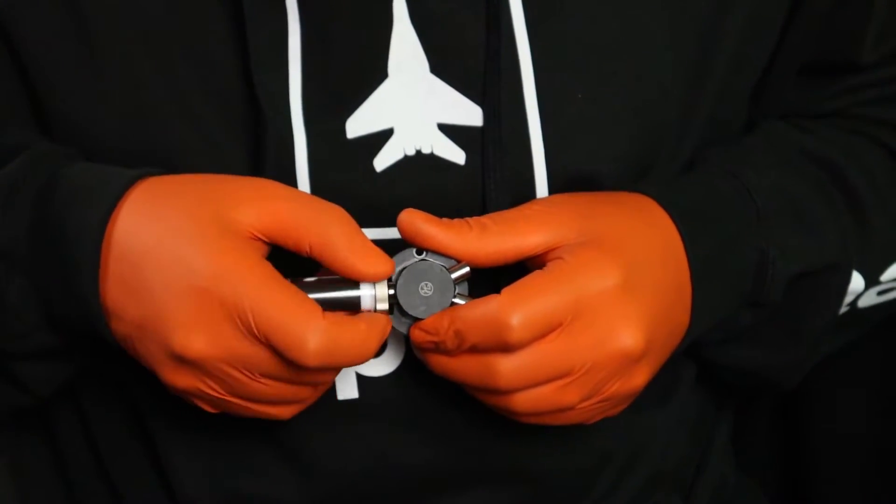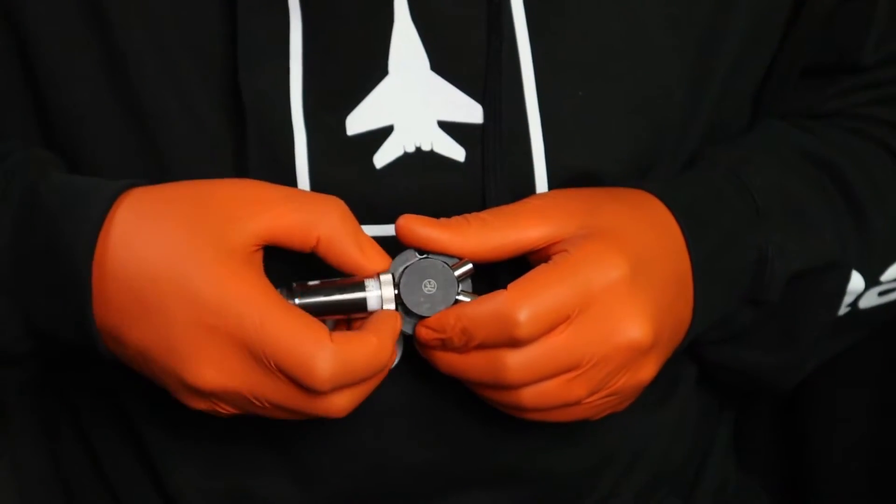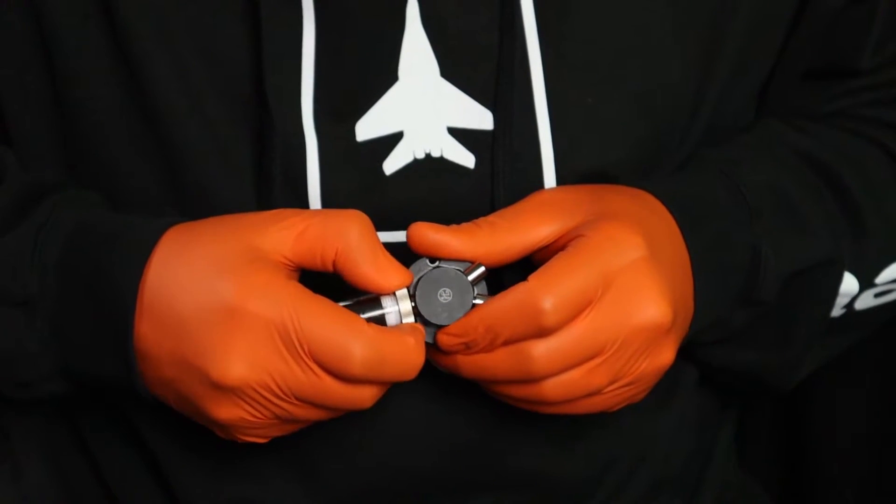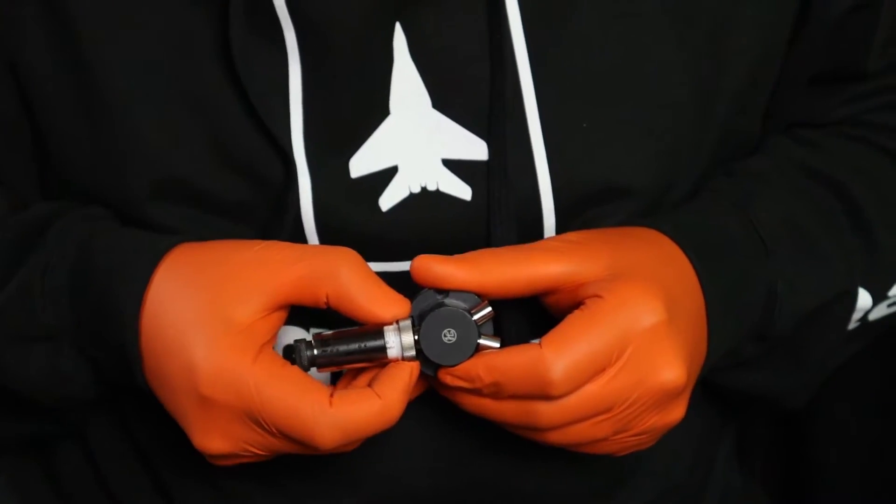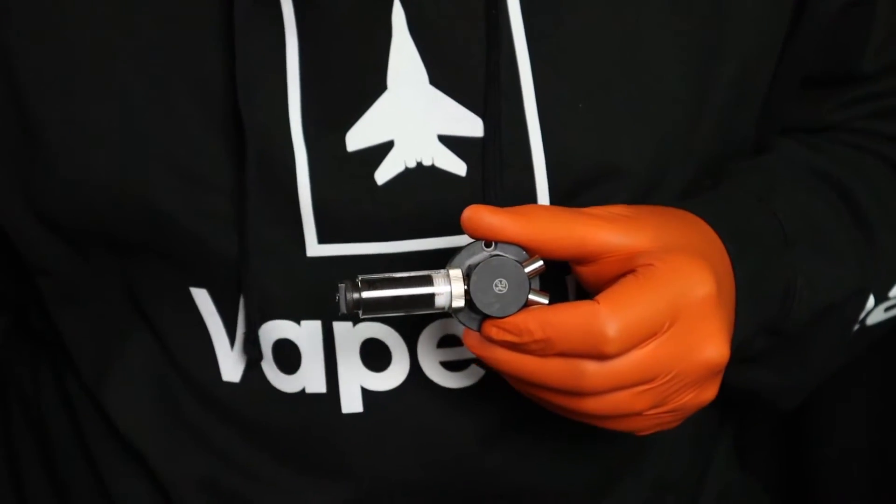Twist the syringe body onto the valve body until the lure lock is fully seated. There will be a gap of only about one millimeter between the silver face of the syringe body and the black housing of the valve when it is fully tightened.